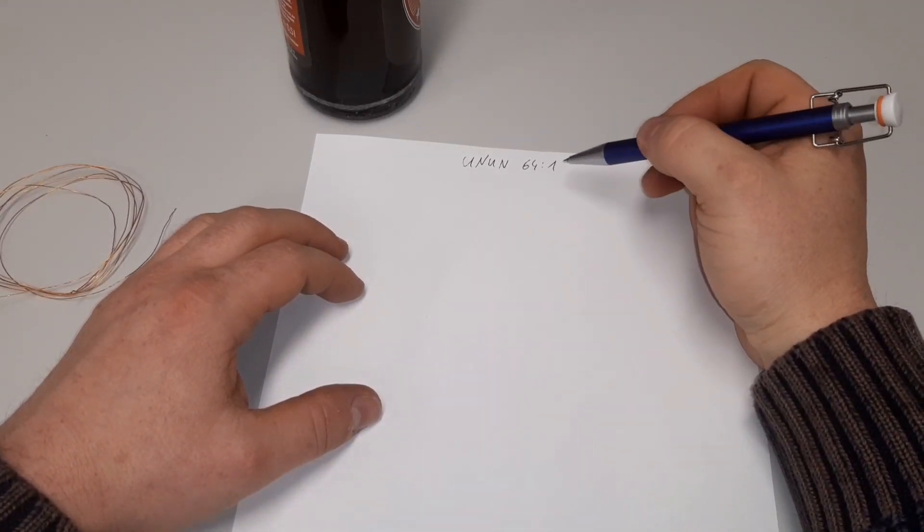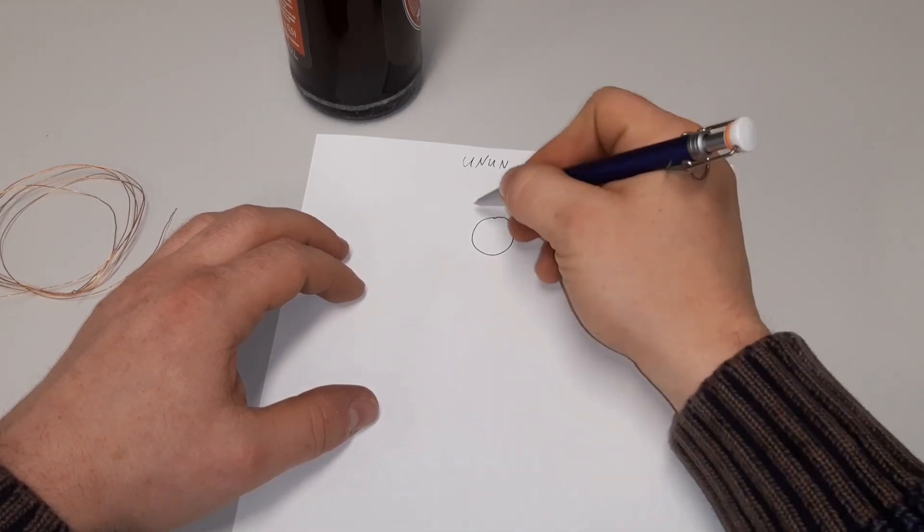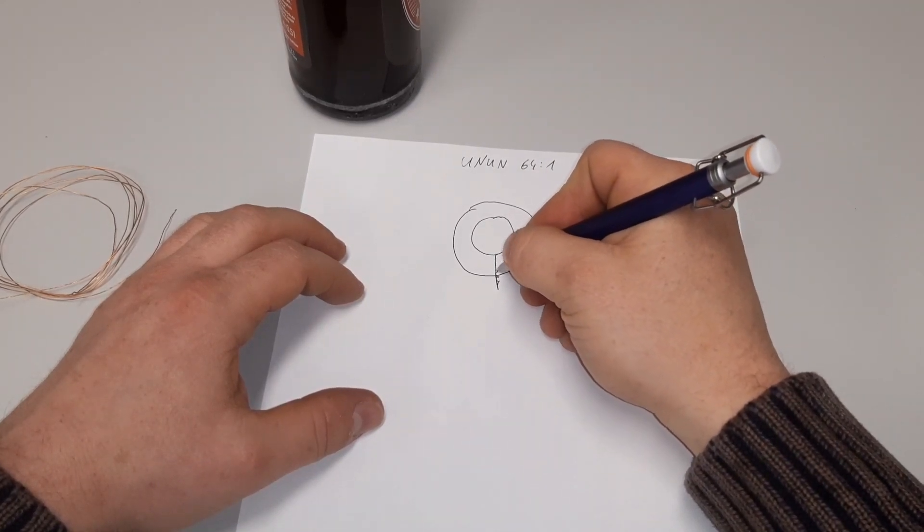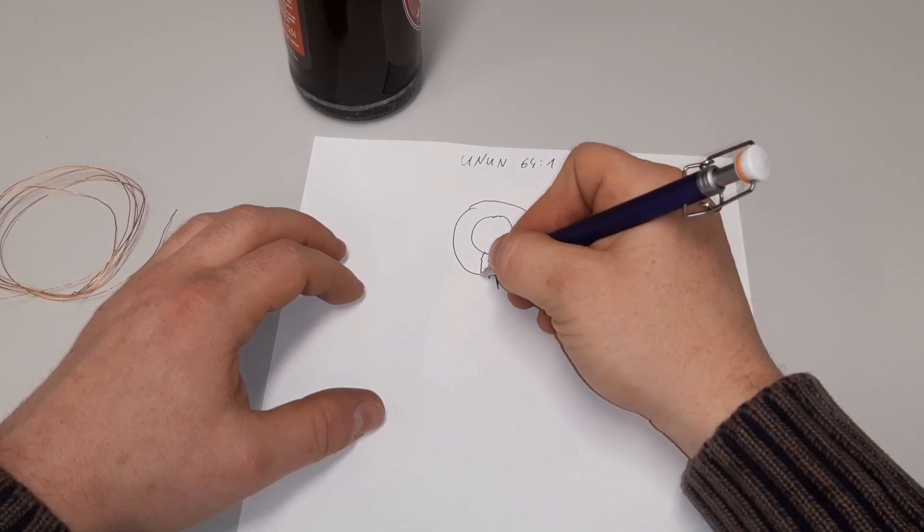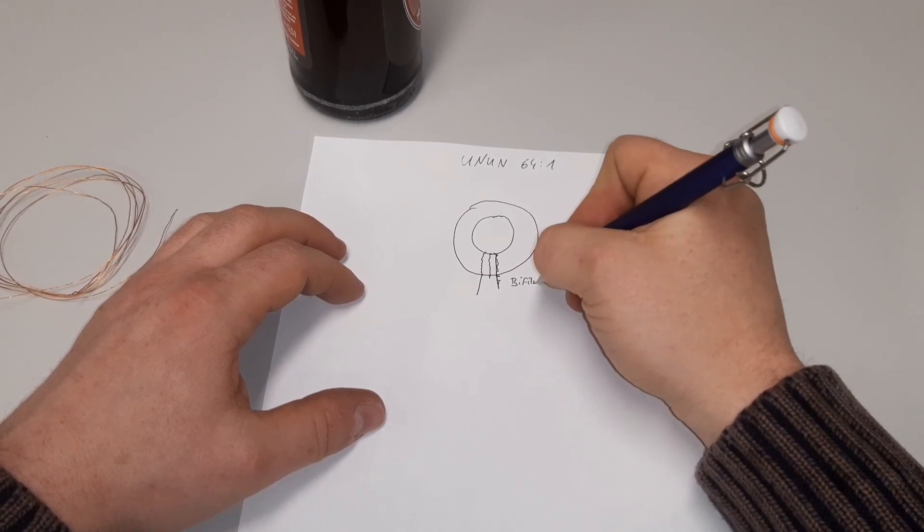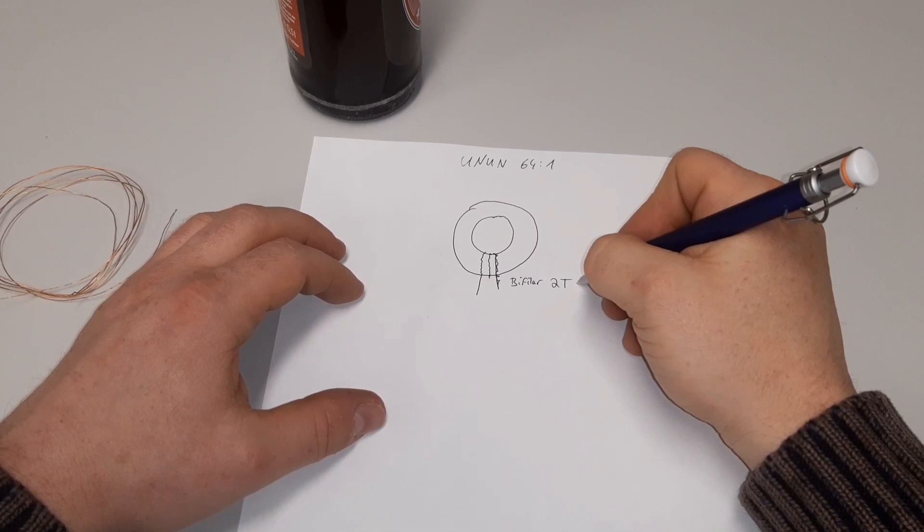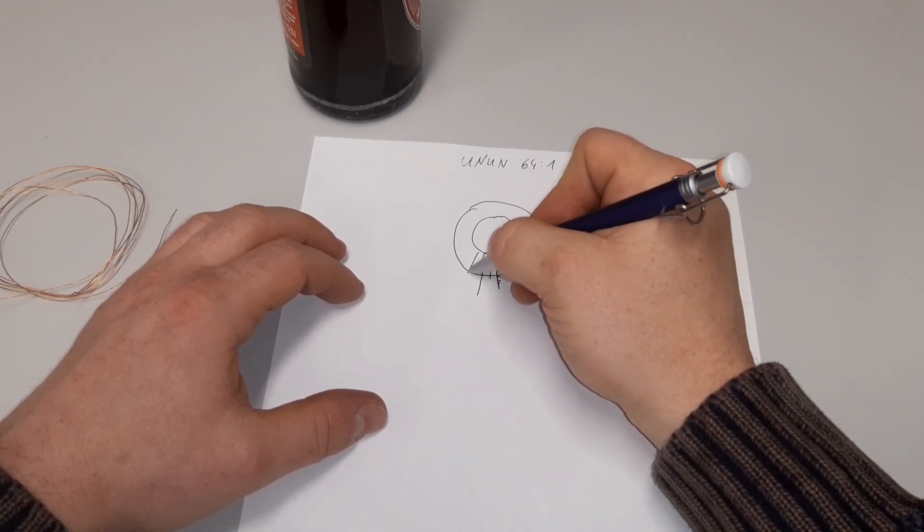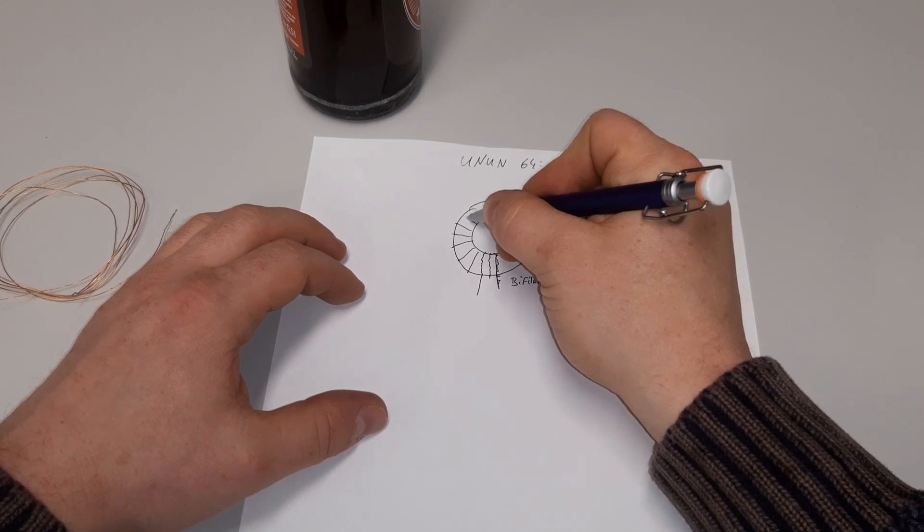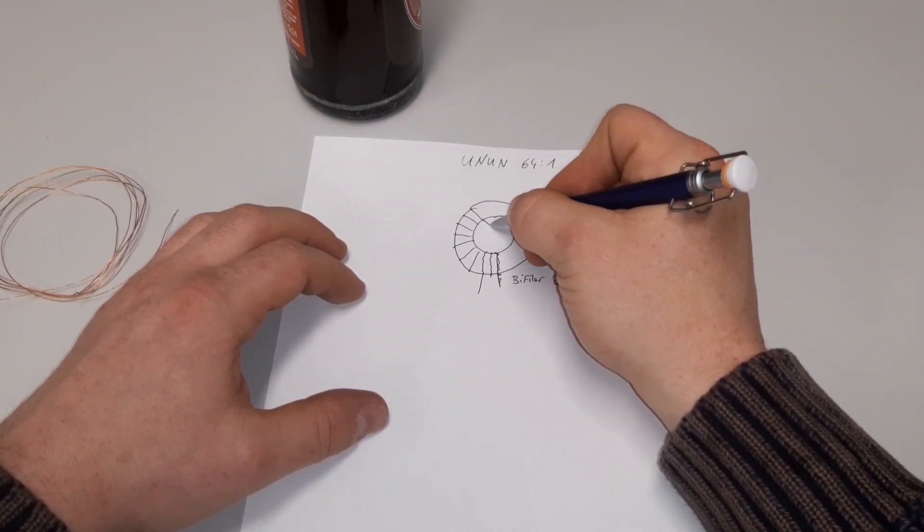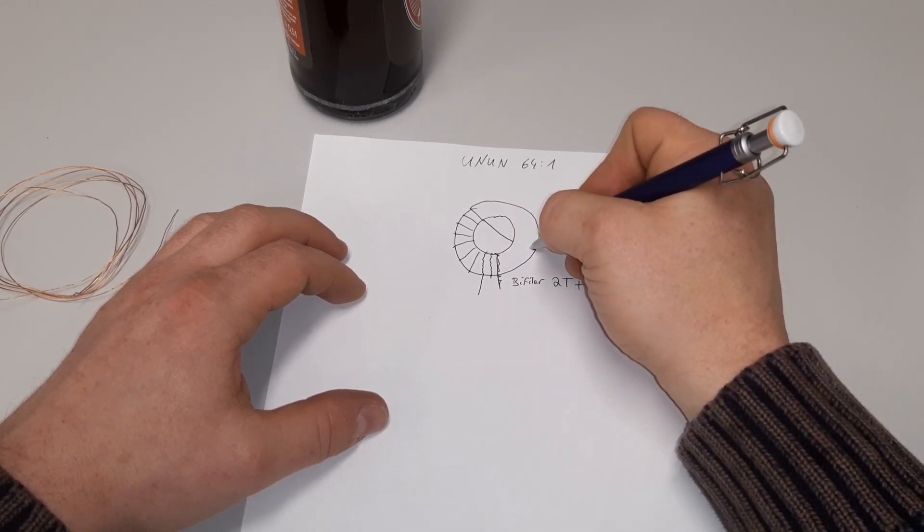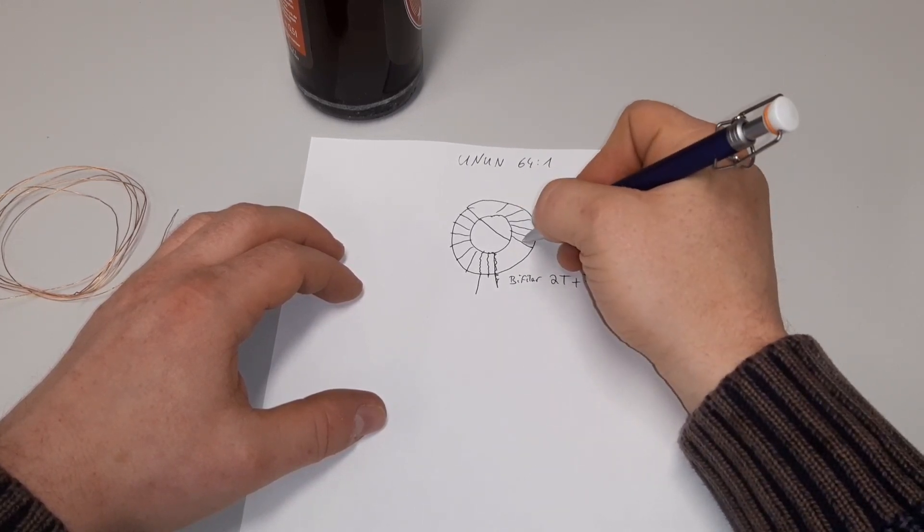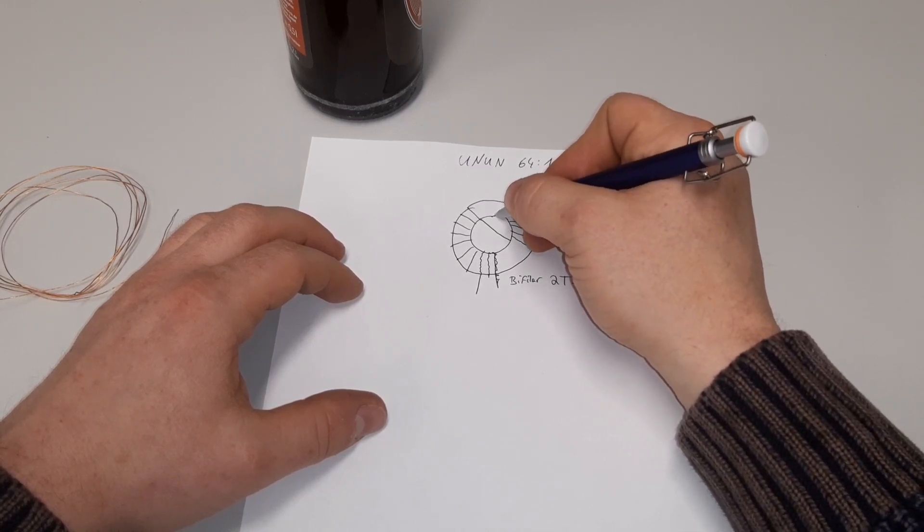That's the union 64 to 1. That's our toroid. Then two windings bifilar plus seven turns plus seven turns. One, two, three, four, five, six, seven. Then you go down to the upper side and then go seven more in this direction.